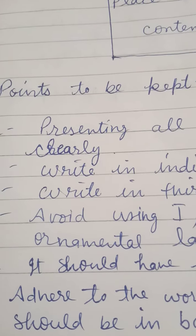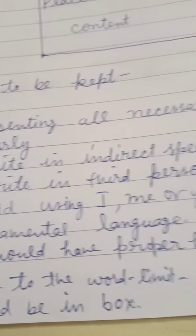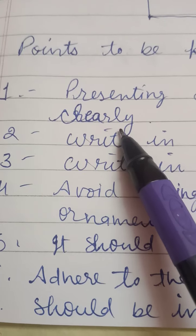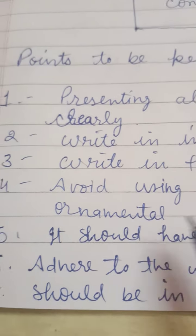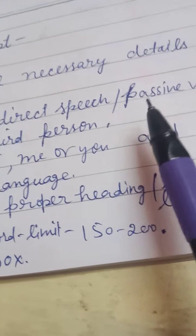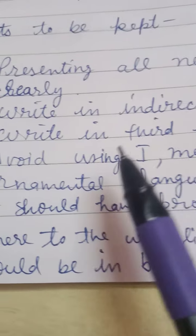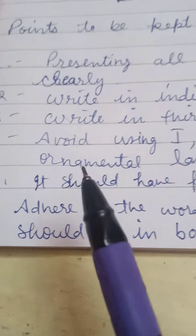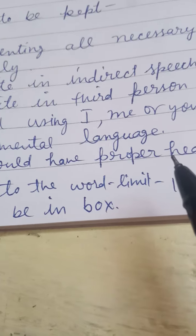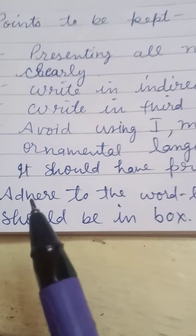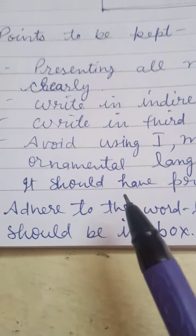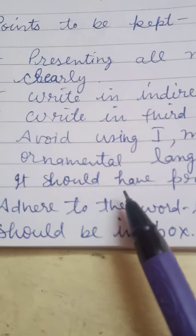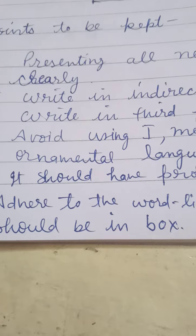The next point is presenting all necessary details. The reporter must include all necessary details clearly. Also, write in indirect speech — do not use 'I' or 'me.' Always write in the third person, using passive voice and indirect speech. Avoid using 'I' and 'me.' Ornamental language should not be there — the reality should be presented as the reporter is observing.